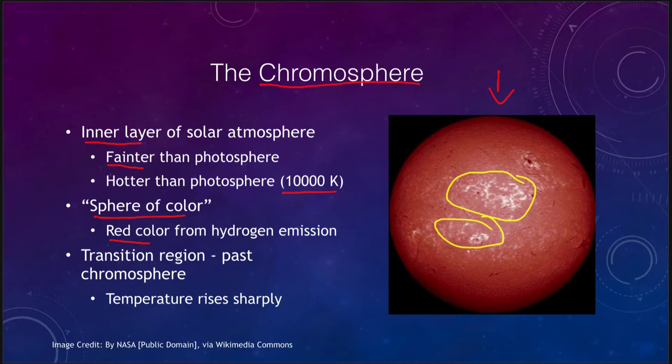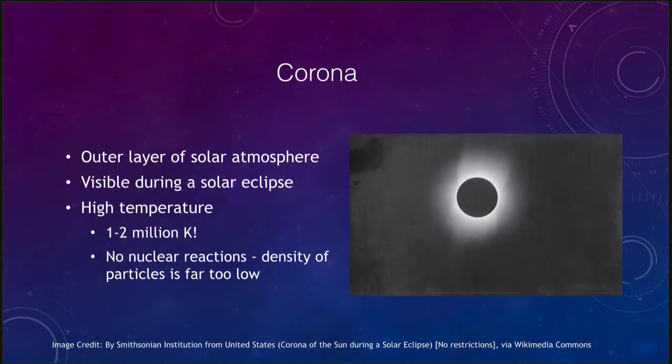Now if we move out a little bit further we will see what we call the transition region. This has a temperature of about 10,000 degrees. Once you get past the chromosphere the temperature rises sharply and that is what we call the transition region between the chromosphere and the next layer that we want to look at, which is the corona of the Sun.